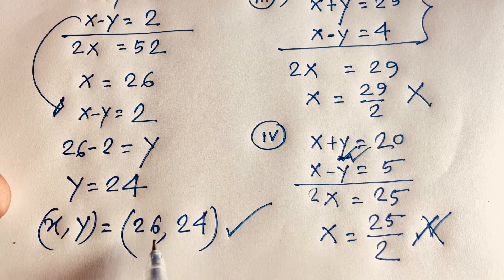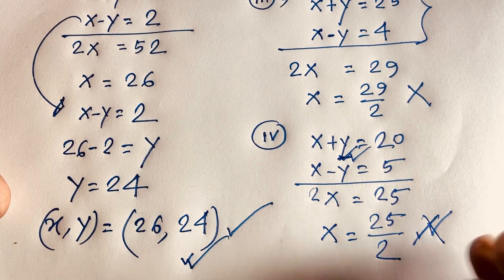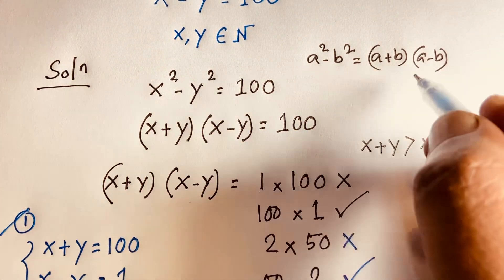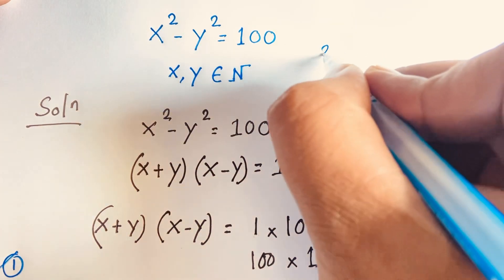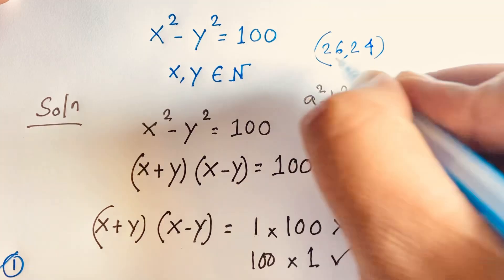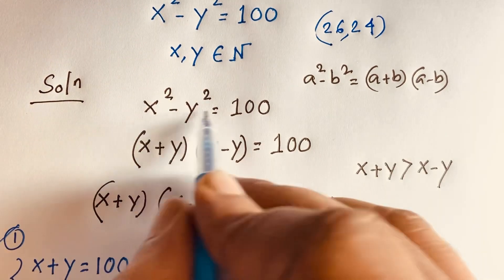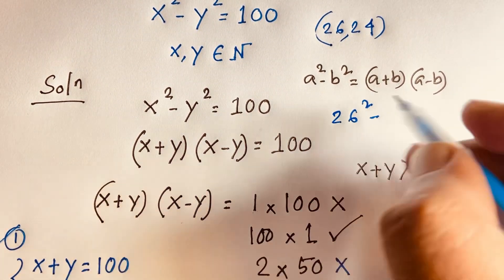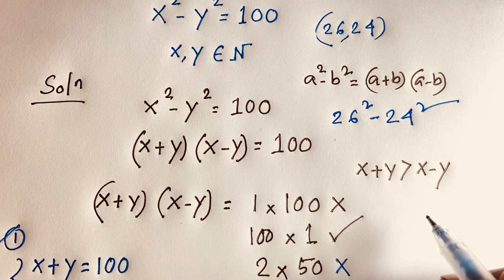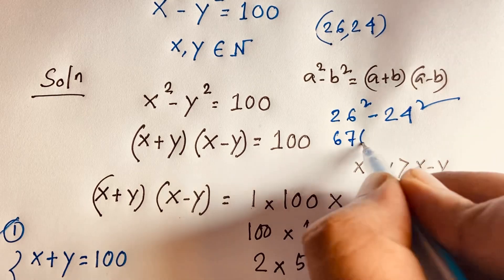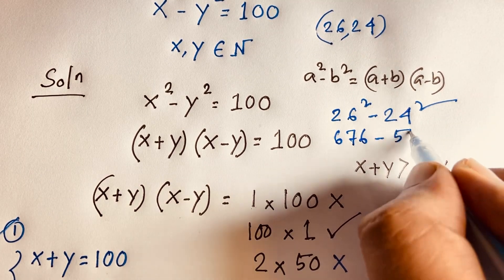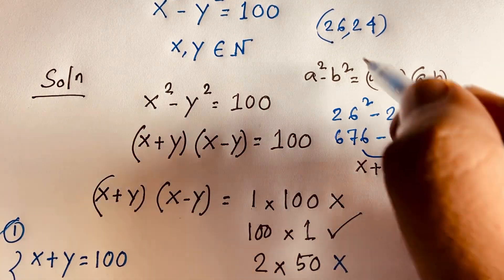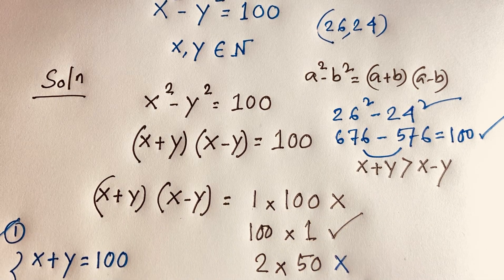Our final answer is x equals 26 and y equals 24. Let's verify: 26 squared minus 24 squared equals 676 minus 576 equals 100. This confirms that x equals 26 and y equals 24 is the correct solution to this Math Olympiad question.